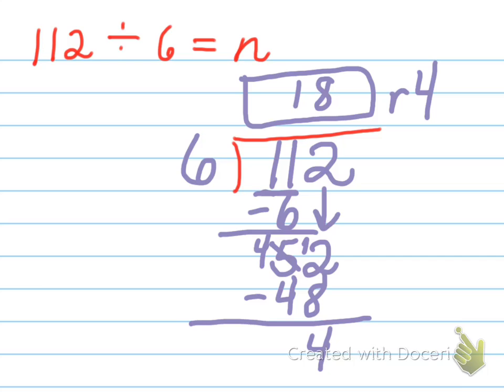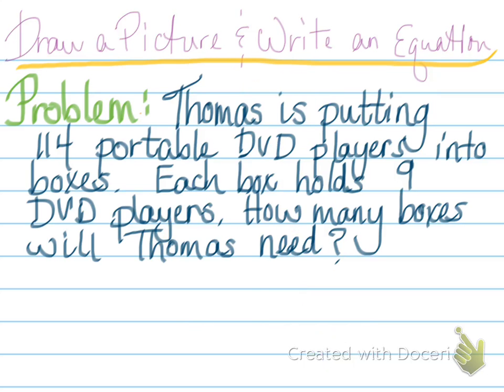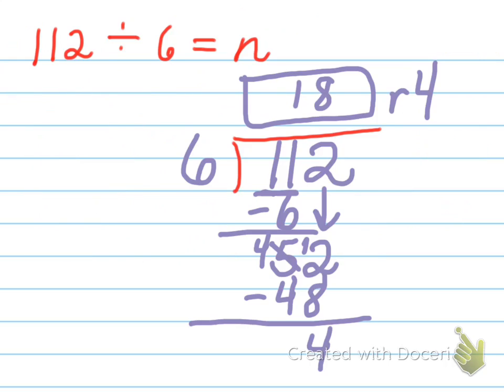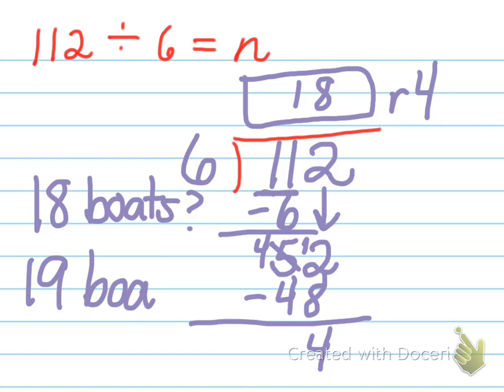Now this is 18 boats and then there are 4 people left over. So how many boats will I need if I have 18 boats but there are 4 people left over? Am I going to be able to just get 18 boats? If I did, 4 people wouldn't be able to ride a boat. So I actually need 19 boats. That's a reasonable answer.